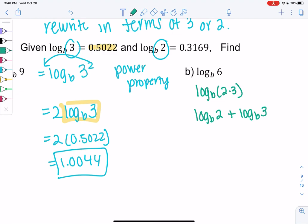And now we can solve this because we know log base b of 2 is 0.3169 plus log base b of 3 is 0.5022. And then we add them up and we get 0.8191. And that's it.